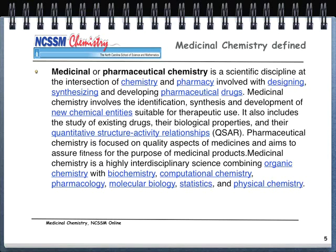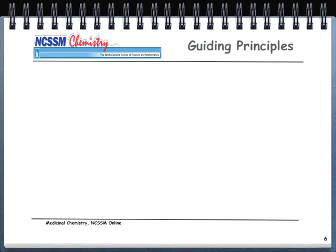Here's a definition of medicinal chemistry — I took this directly from Wikipedia and edited it down a little bit. What you should notice is the words chemistry and pharmacy are popping up, and there are also things about statistics. Notice at the very bottom it says this is a highly interdisciplinary science combining organic chemistry, biochemistry, computational chemistry, pharmacology, molecular biology, statistics, and physical chemistry. These are all things you're going to learn in this course — very few of which, if any, you've done before. It will require your best effort and lots of concentration and work.